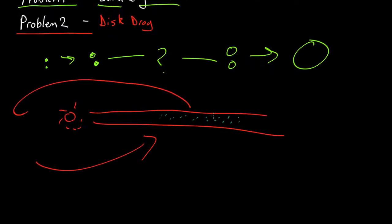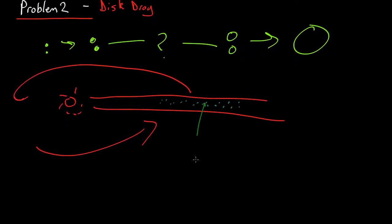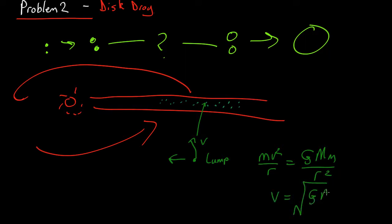Now consider one of these lumps. It's moving in a circle at velocity v. So there must be a force towards the middle, a centripetal force, given by the usual equation, mv squared over r. And for a big solid lump, like a planet or a boulder or something like that, that will be given by gravity. So it's equal to Newton's gravity, GMm over r squared, which means we get a velocity, as we've worked out before, of root GM over r. All straightforward. We've seen that before.